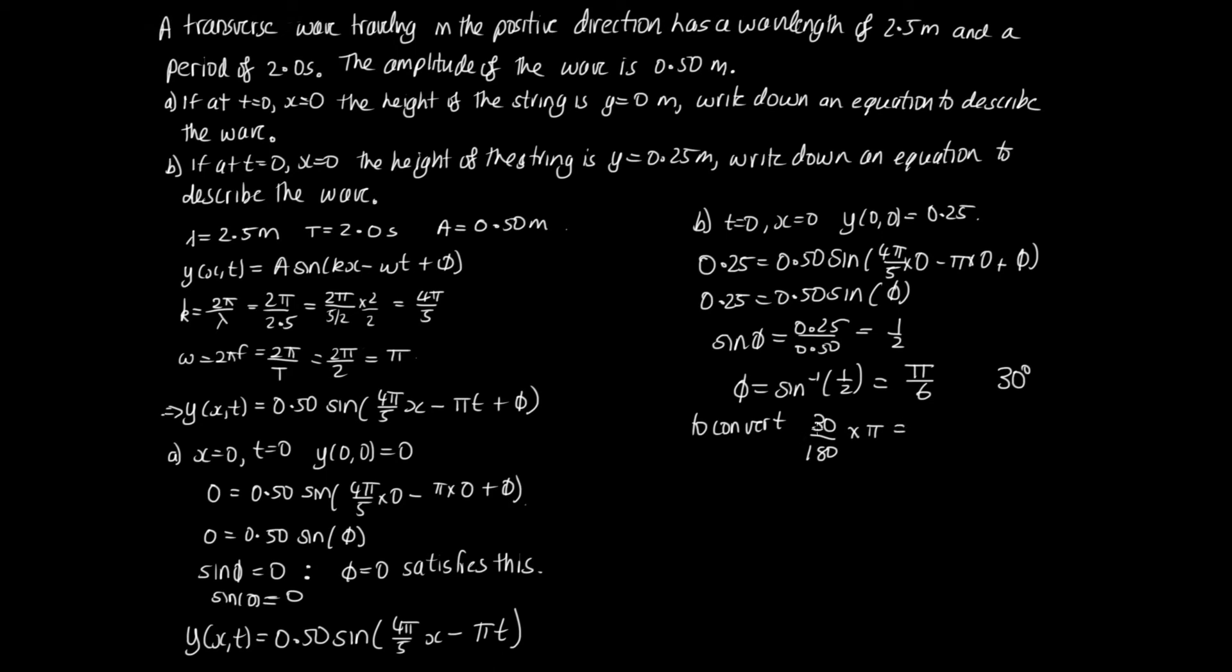So when we do that, you can hopefully see that because 3 goes into 18 six times, we end up with a sixth of pi, which is what we've got up here. You could also give this as a decimal if you wanted, but it is kind of nice having everything in terms of pi. So we can substitute this in now. So our equation for this case is y of x and t is equal to 0.50 sin of 4 pi on 5 x minus pi t plus pi on 6. So we've solved this problem now.